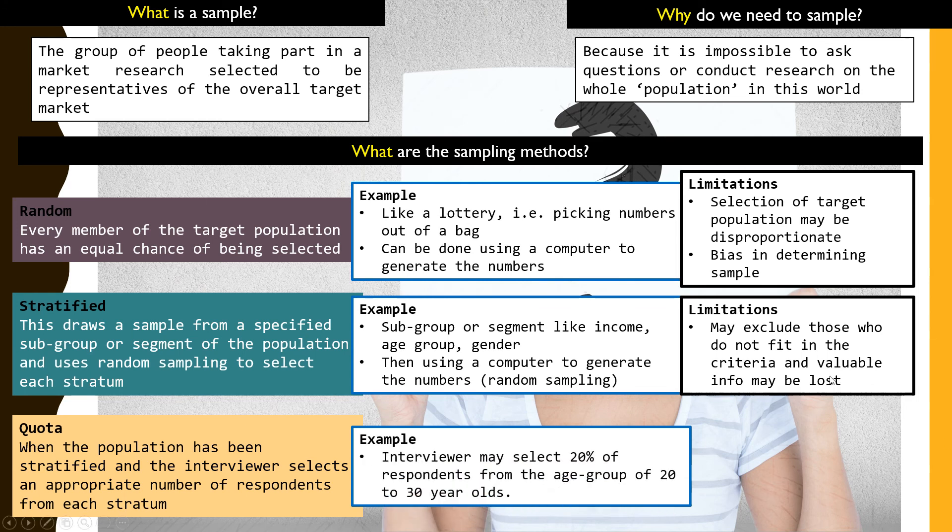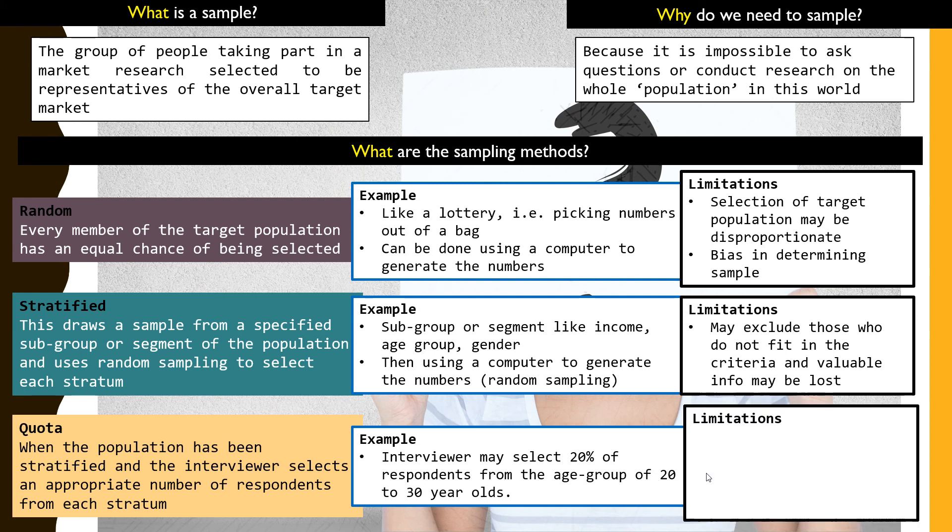For example, the interviewer may select the respondents for the age group of 20 to 30 year olds, 20 of them, and that makes it more precise. Now let's look at the limitations. It may limit information once the quota is already reached—if you have 20, which is about 300 people, that's all you have in gathering your information. This could also still lead to some bias and assumptions based on how the selection of 20 is done, whether it's precise, whether it's enough.